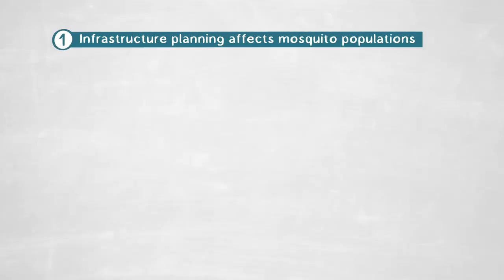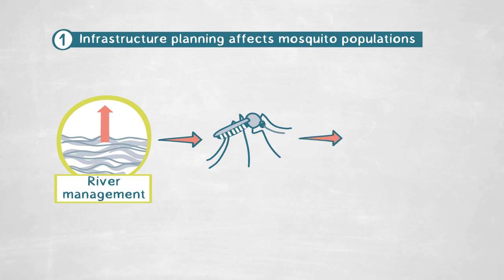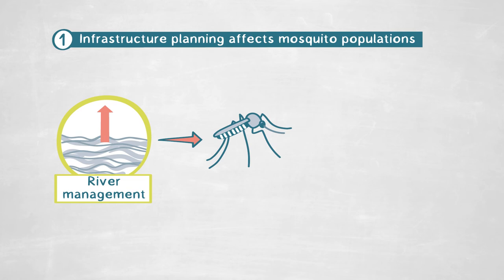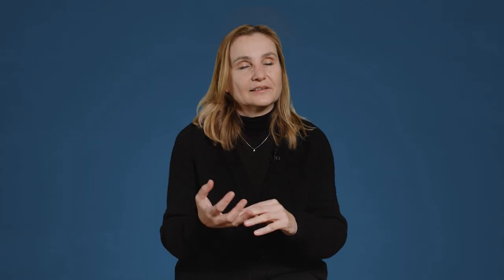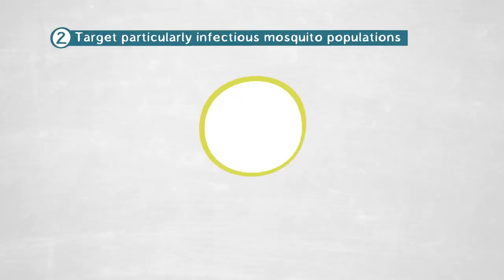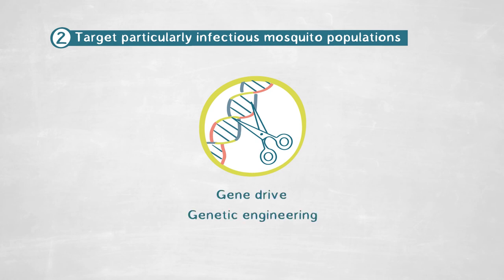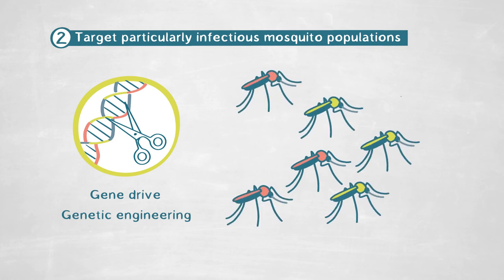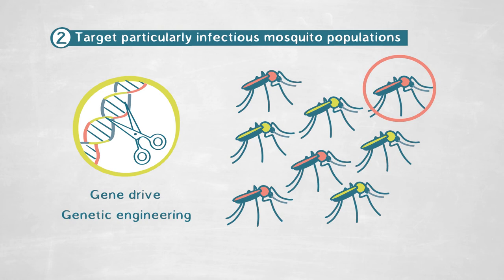Why is this important? First, it matters for decisions about building dams or river management in Africa, which are of high importance for local populations. The old assumption is that increasing water bodies will attract more mosquitoes and increase malaria transmission — however, our study shows that is not always true. You could monitor this and build dams in areas where the vectors present are not good transmitters of malaria. Second, this study highlights that you must target particular species to interfere with malaria transmission, not all mosquitoes. You can use selective methods such as gene drive or genetic engineering to target only the species responsible for malaria transmission and leave other mosquito species untouched to fulfill their ecological functions.